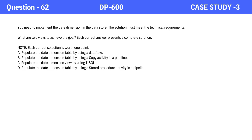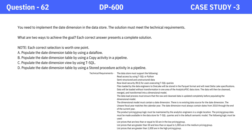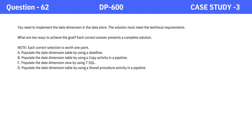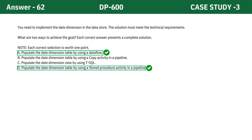Question 62: You need to implement the date dimension in the data store. The solution must meet the technical requirements. What are two ways to achieve the goal? Each correct answer presents a complete solution. Options: A — Populate the date dimension table by using a data flow. B — Populate the date dimension table by using a copy activity in a pipeline. C — Populate the date dimension view by using T-SQL. D — Populate the date dimension table by using a stored procedure activity in a pipeline. Pause the video and consider the options before checking the answer. The correct answers are Option A and Option D.